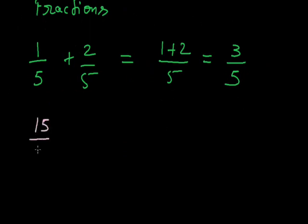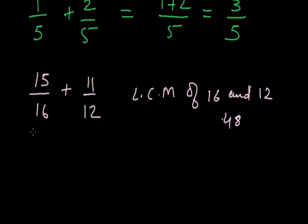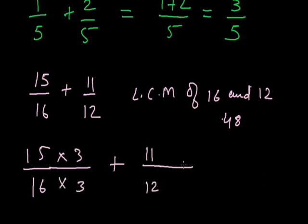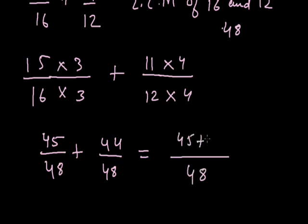But if we would be having different denominators, for example, if I have to add 15 by 16 and 11 by 12, first I have to take out the LCM of 16 and 12. So, LCM of 16 and 12 is 48. Now, to convert 15 by 16 with the denominator 48, I have to multiply both the numerator and the denominator by 3. And, to convert 11 by 12 with the denominator 48, I have to multiply it by 4. Now, it will be equal to 45 upon 48 plus 44 upon 48. Now, the denominators are same. We can simply add the numerators 45 plus 44, so it will be equal to 89 upon 48.